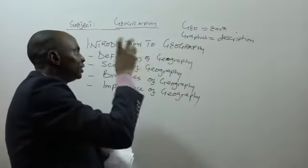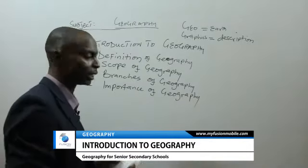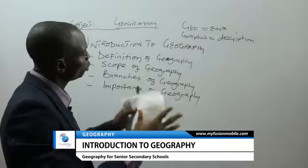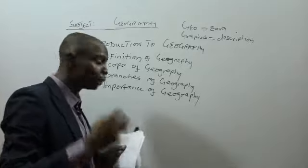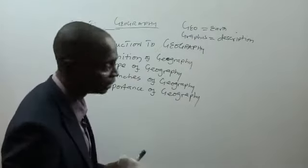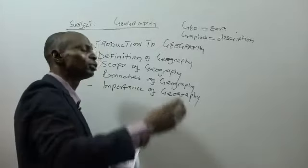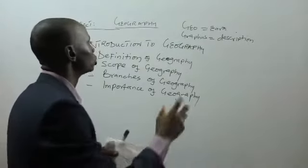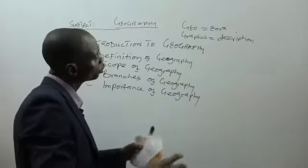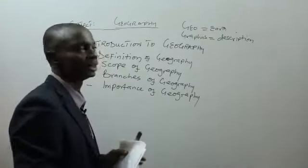Having said that, the description of the earth alone is not the full definition of geography — it goes beyond that. When we are talking about geography, it also deals with the activities of people living on the surface of the earth. That is, it deals with human activities, human interactions, and every aspect of human existence, both living and non-living things.